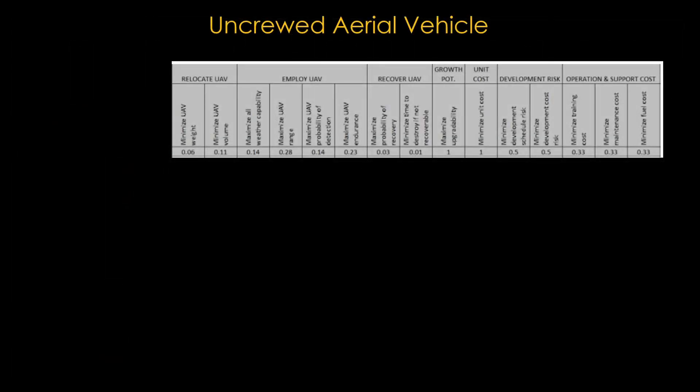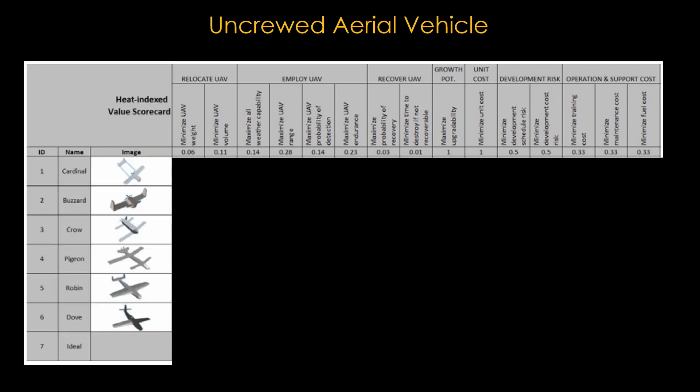The same basic idea works in aerospace. If you're developing an uncrewed aerial vehicle — the fancy name for a large drone — you come up with a list of requirements and a value that tells you how important each requirement is. You then spend a lot of time coming up with different approaches that might meet your requirements.